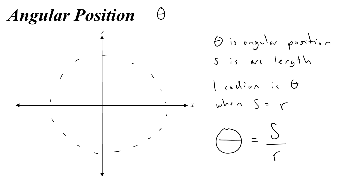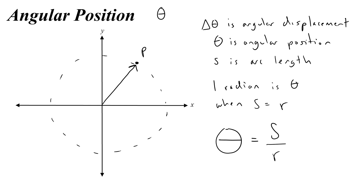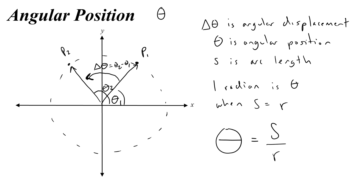In angular kinematics or motion, it's very common to talk not just about your angular position theta in radians, but the change of your angular position, which we call delta theta. And we call delta theta your angular displacement. So if here at point 1 you have an angular position theta 1, and then at point 2 you have angular position theta 2, then your angular displacement is just this angle between the two — delta theta equals theta 2 minus theta 1.